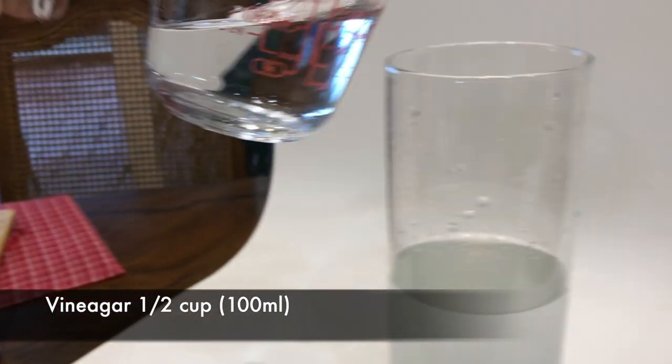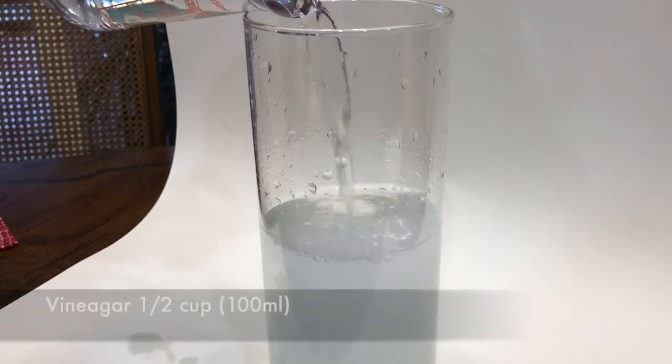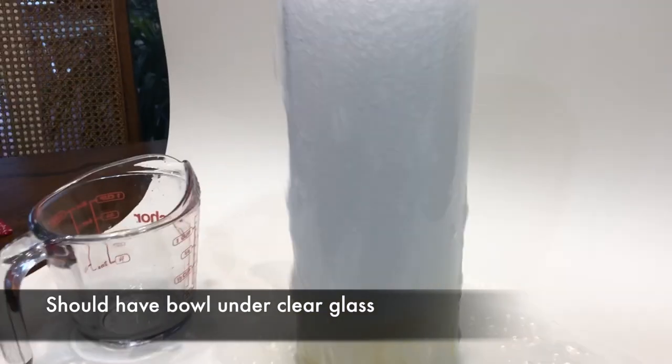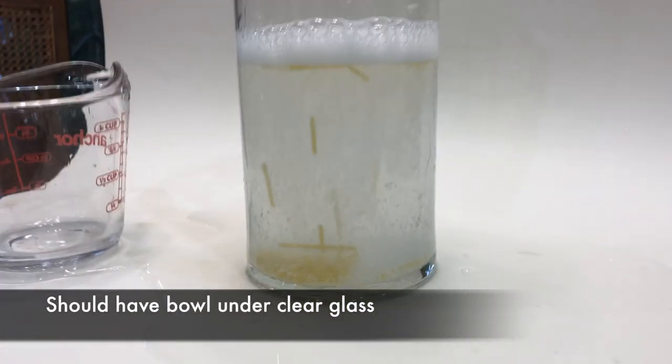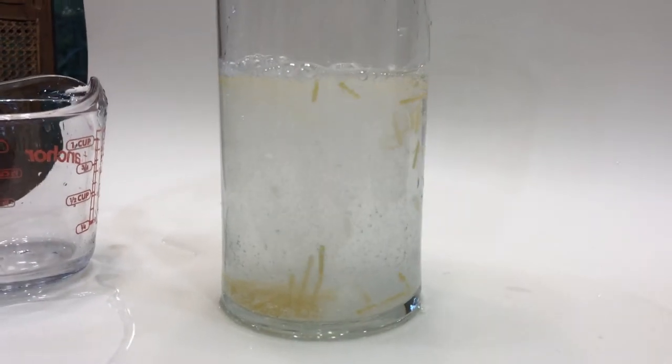Then you're going to add a half a cup, 100 milliliters of vinegar. You should have a bowl under this, as I don't. Big mess. And there you go. We're going to start seeing the chemical reaction with a dancing spaghetti.